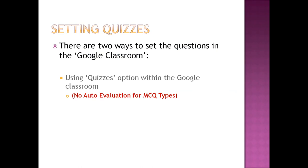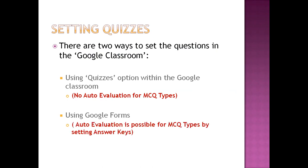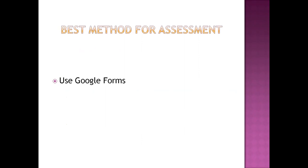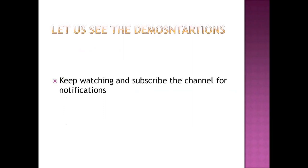If we use the quizzes option for formative assessment question creation, there is no auto evaluation for MCQ or true/false types. But if you use Google Forms, there is a feature for enabling the answer key, and then Google Forms does auto evaluation automatically. The teacher only needs to evaluate open-ended or short answer type questions. All MCQ type questions will be evaluated by Google Forms automatically. So the best method for assessment is always to use Google Forms. In this video, we are going to discuss the demonstration for Google Form creation.